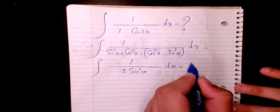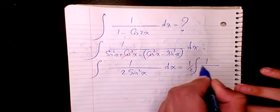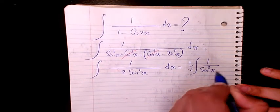Then it will be 1 over 2, 1 over sine squared x dx.